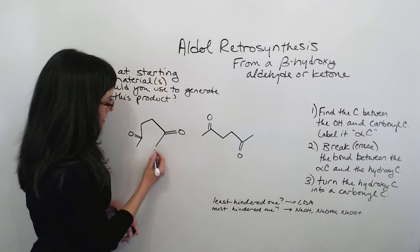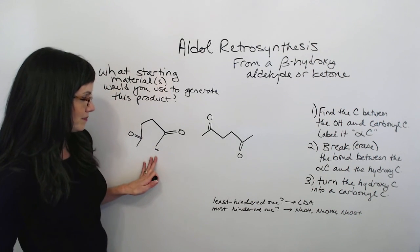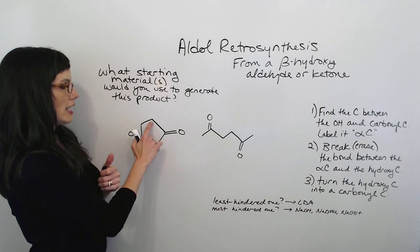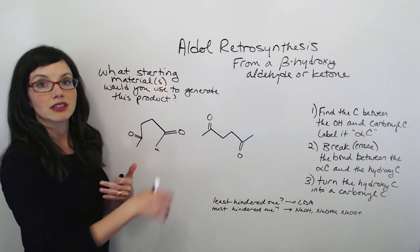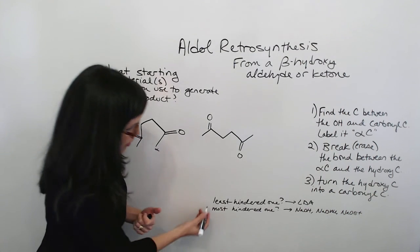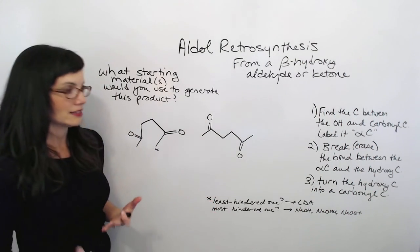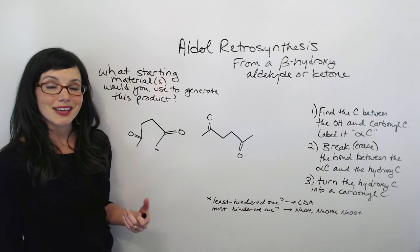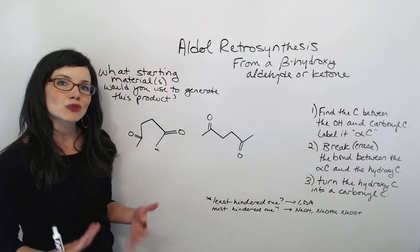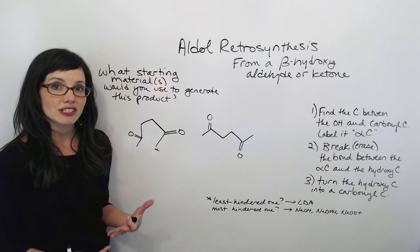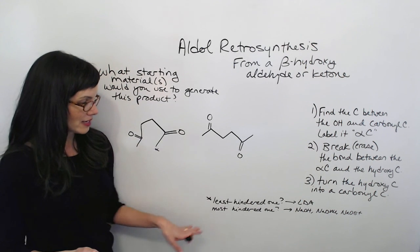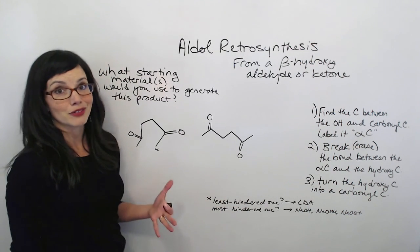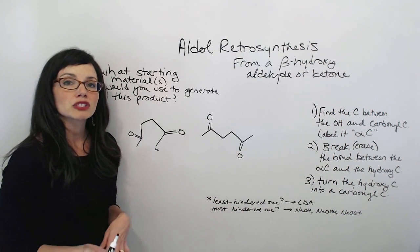Now, one thing to notice: since this was our alpha carbon, you may think the alpha carbon is the less hindered one, so we would want LDA as our base — and LDA is a perfectly fine choice. But this is an intramolecular aldol condensation. What's interesting is that you could have also chosen sodium hydroxide, sodium methoxide, or similar bases and that would have worked as well.